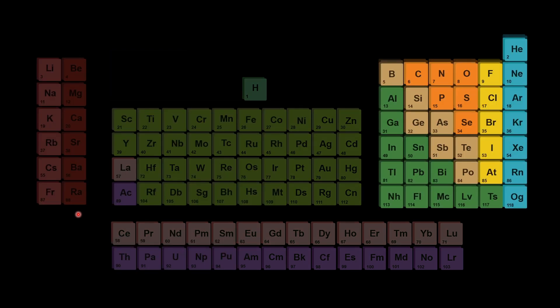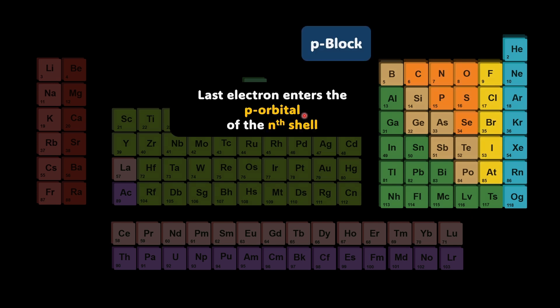Now moving to the P block. In P block the last electron enters the P orbital of the nth shell. The block contains a fascinating variety of metals, non-metals and metalloids. If you see the entire periodic table, whatever non-metals you see are going to be in P block. In fact all the metalloids.